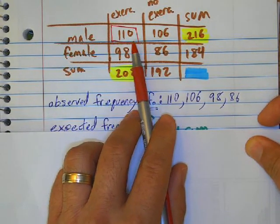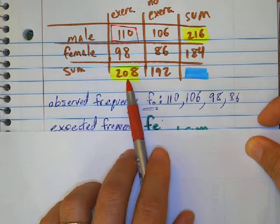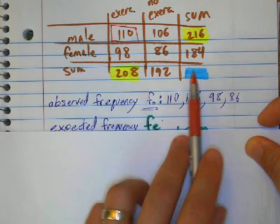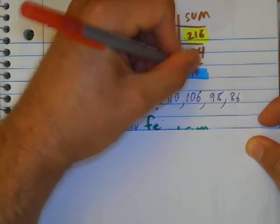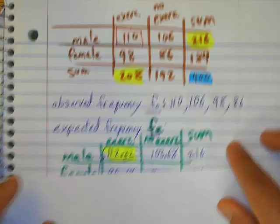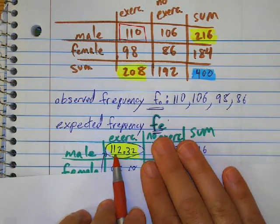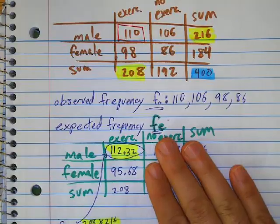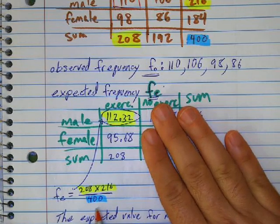to find the expected frequency, you multiply 208 times 216 and divide it by our total, which is 400. So that's what I'm going to do. So to find this value right here, I did 208 times 216 divided by our total, which is 400.